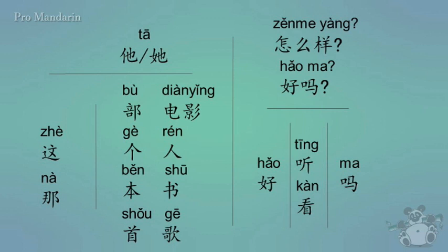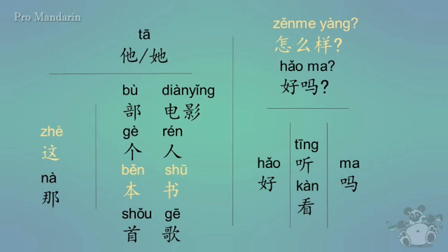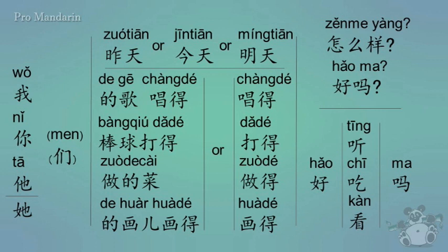How would you say 'how is this book' or 'is this a good book'? Zhè běn shū hǎo kàn ma? Or alternatively, zhè běn shū zěnme yàng? Before we move on, here are three questions you can answer in the comments below: does this person look good; how is he or how is he doing; and that is a good movie. Now let's move on to the next section.